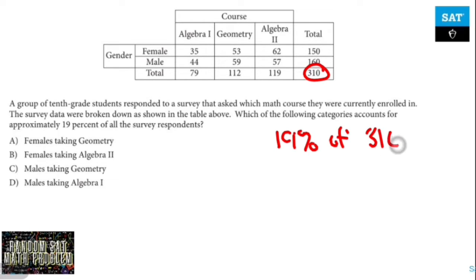What I would do here is multiply 0.19 times 310 and see what number that gives me. This is just straight up old multiplication.